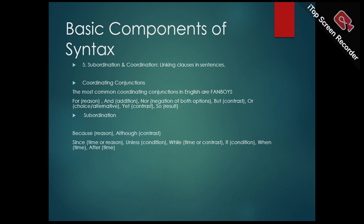Subordination is used to link a dependent clause, which cannot stand alone as a complete sentence, to an independent clause, which can. Common subordinating conjunctions include: because (reason), although (contrast), since (time or reason), unless (condition), while (time or contrast), if (condition), when (time), after (time).